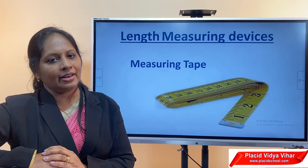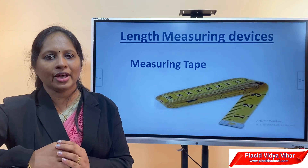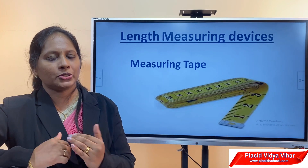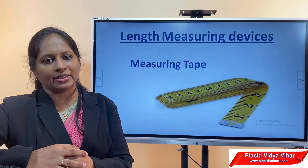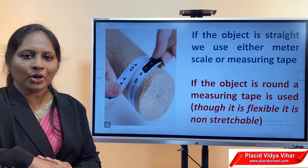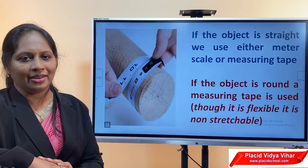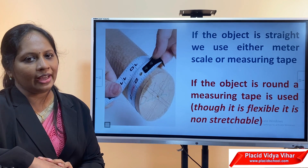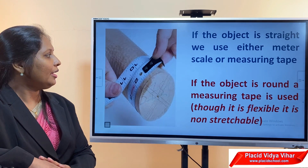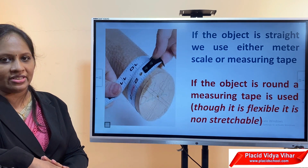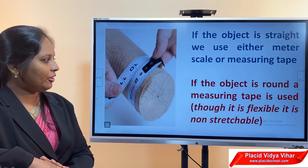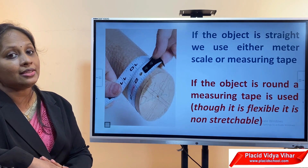If you want to measure the length of a pencil, you can use the small centimeter scale from your geometry box. So depending on the type of object and the measurement, you have to choose the measuring device properly. If the object is straight — like the length of a room or a book — we use a meter scale or measuring tape. But if the object is round or curved, not straight, you cannot use a meter scale, but you can use a measuring tape because it is flexible.